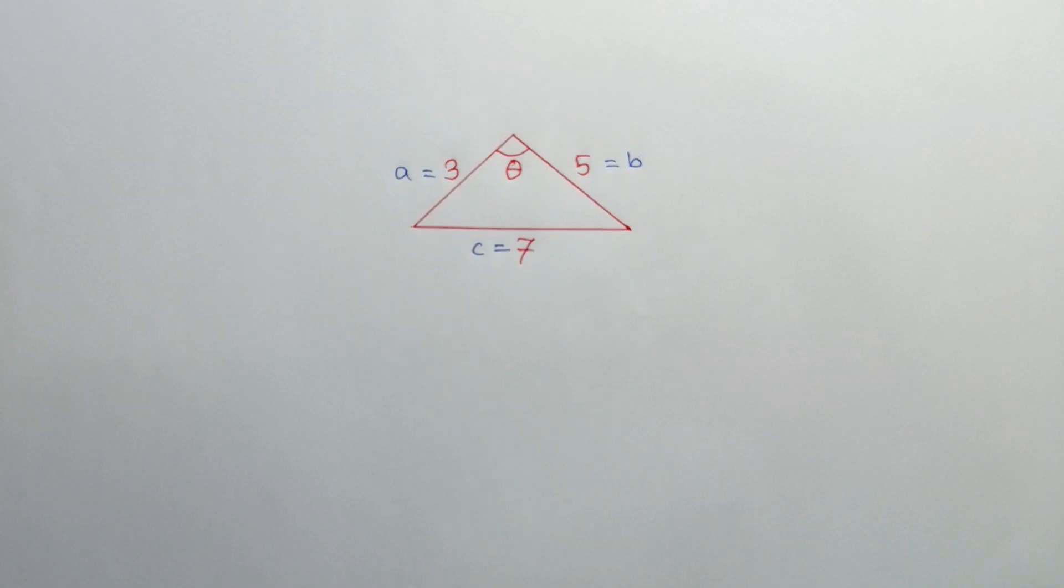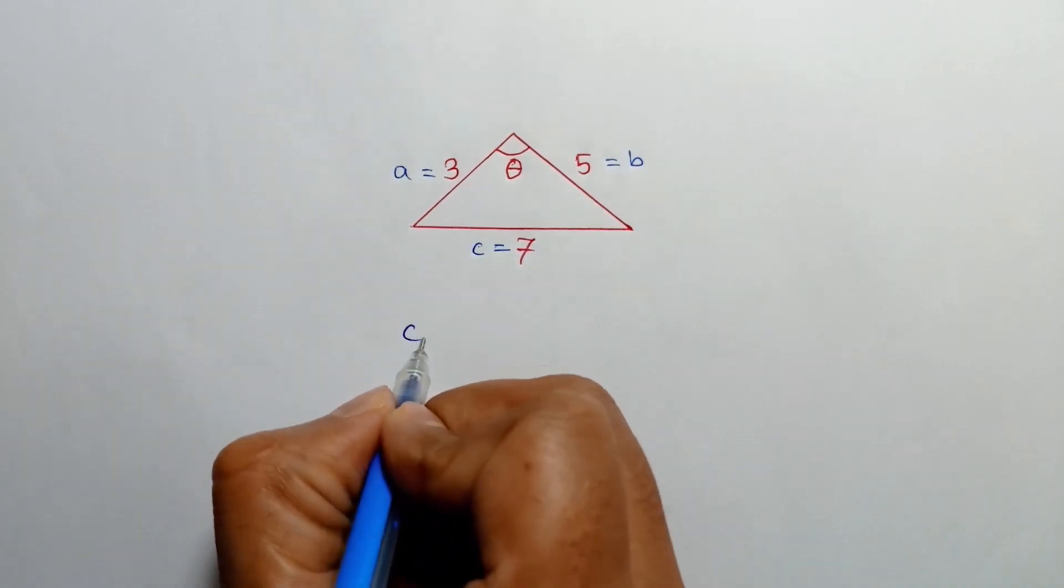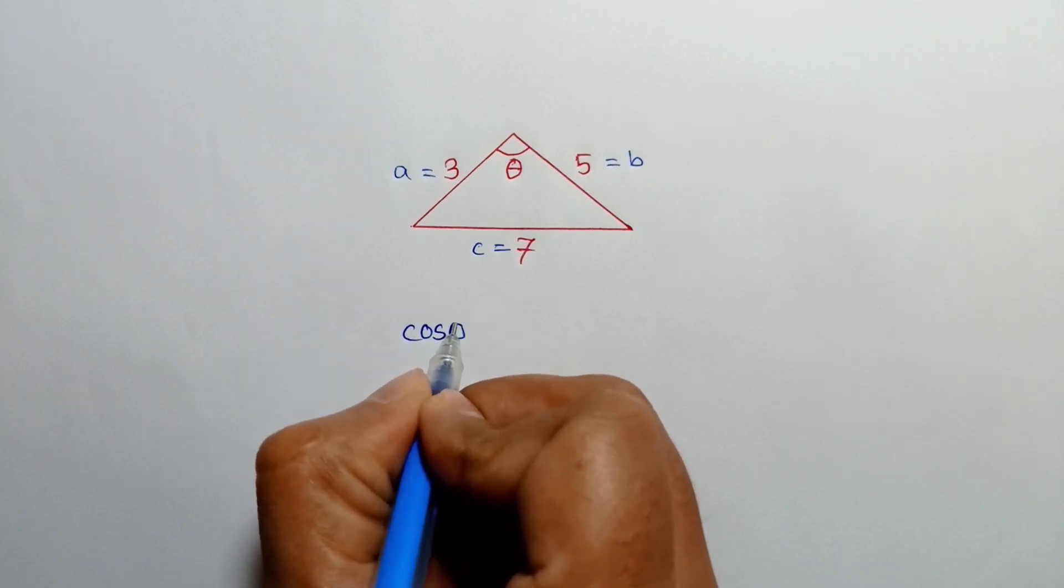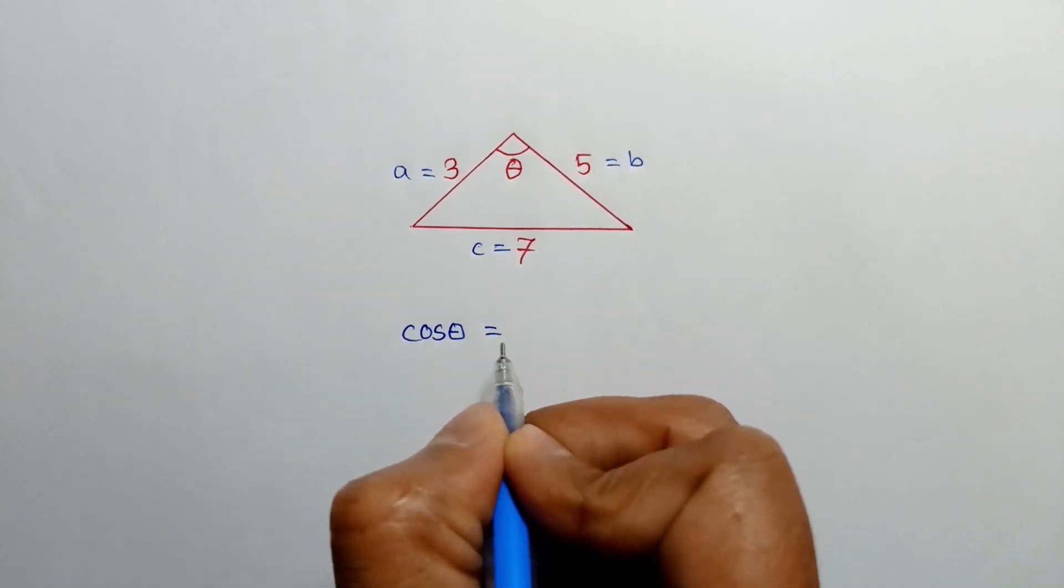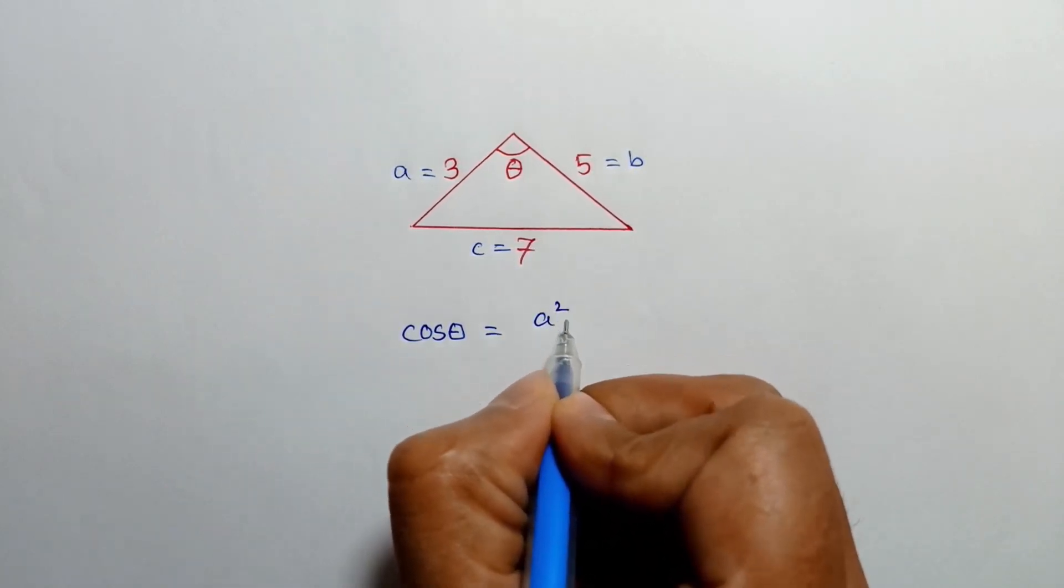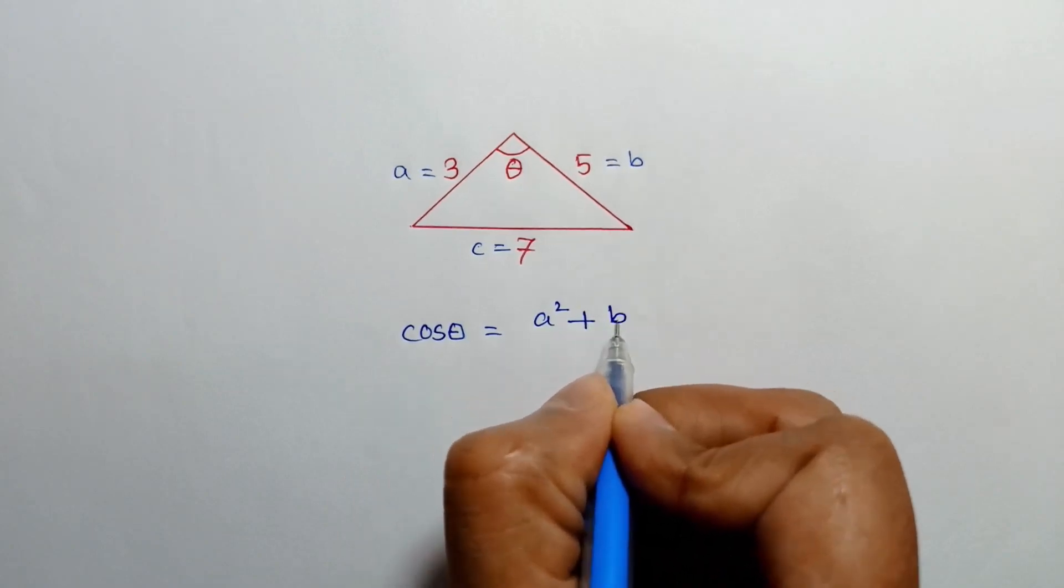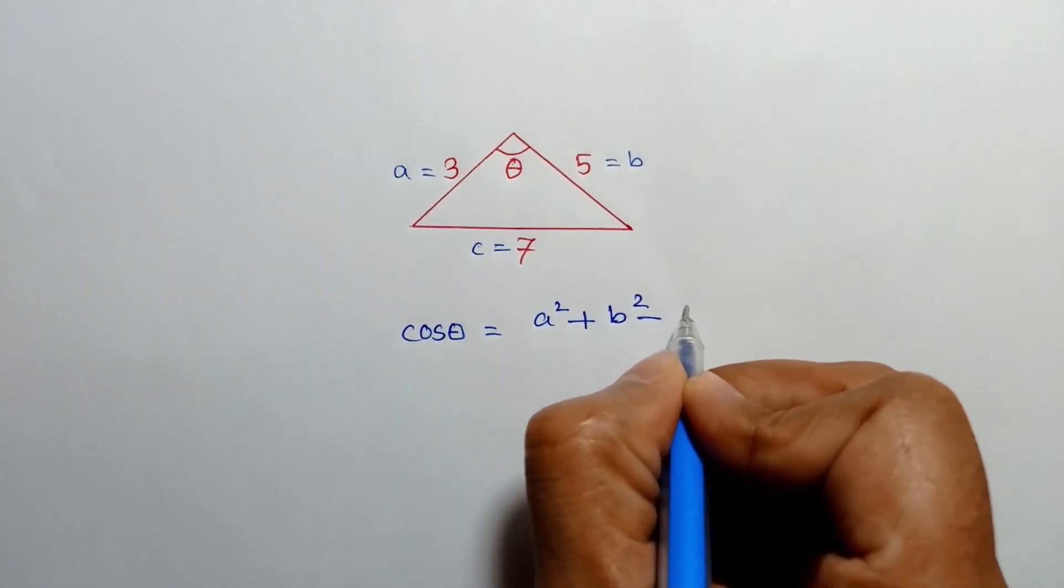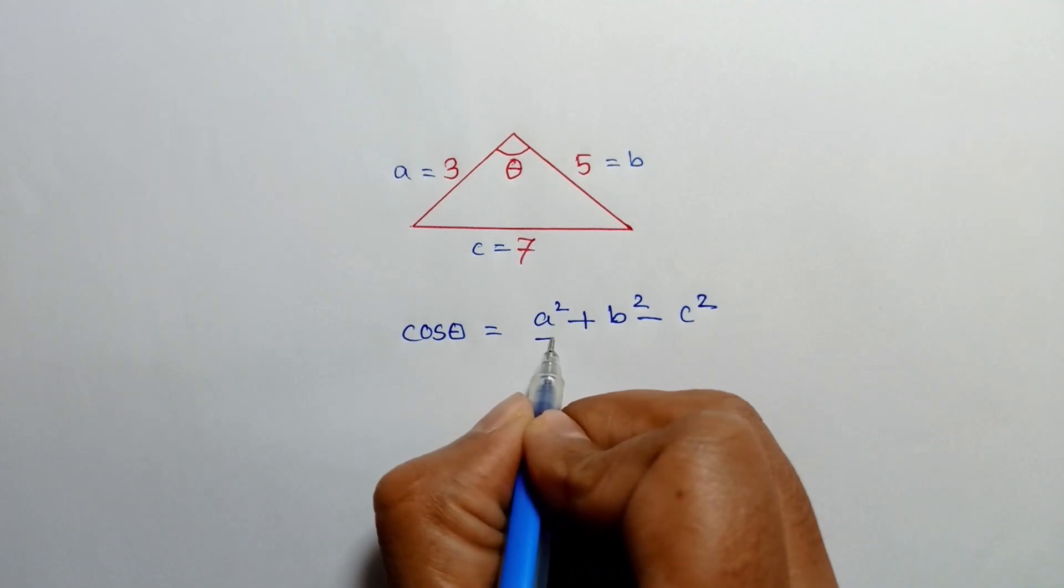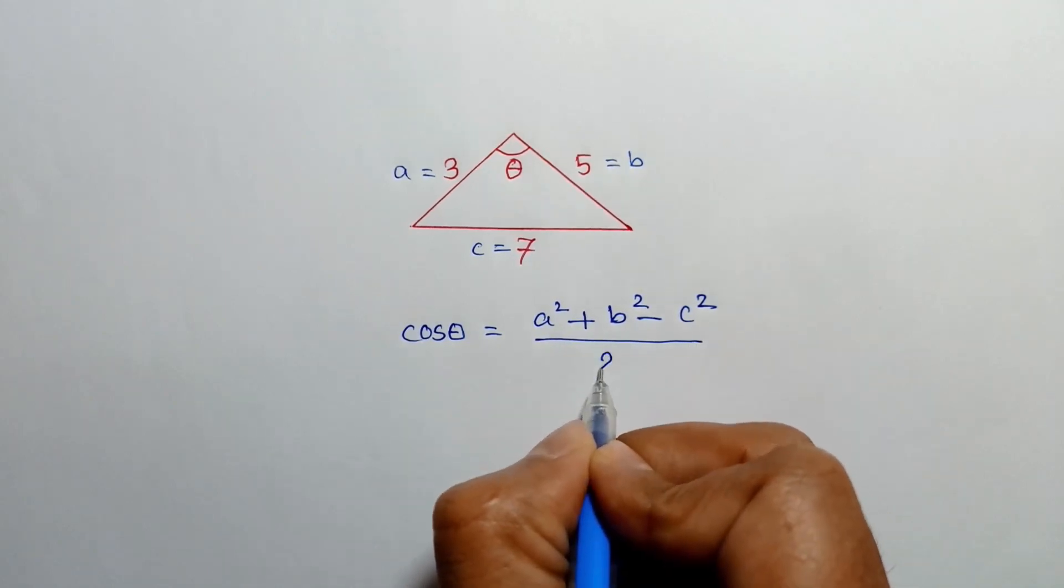Now, according to cosine rule we can write cos theta is equal to A square plus B square minus C square over twice AB.